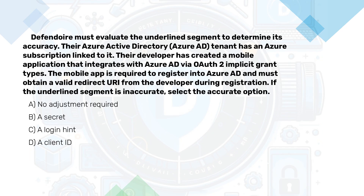We must evaluate the underlined segment to determine its accuracy. Our Azure Active Directory tenant has an Azure subscription linked to it. Our developer has created a mobile application that integrates with Azure Active Directory via OAuth implicit grant type. The mobile app is required to register into Azure Active Directory and must obtain a valid redirect URI from the developer during registration.